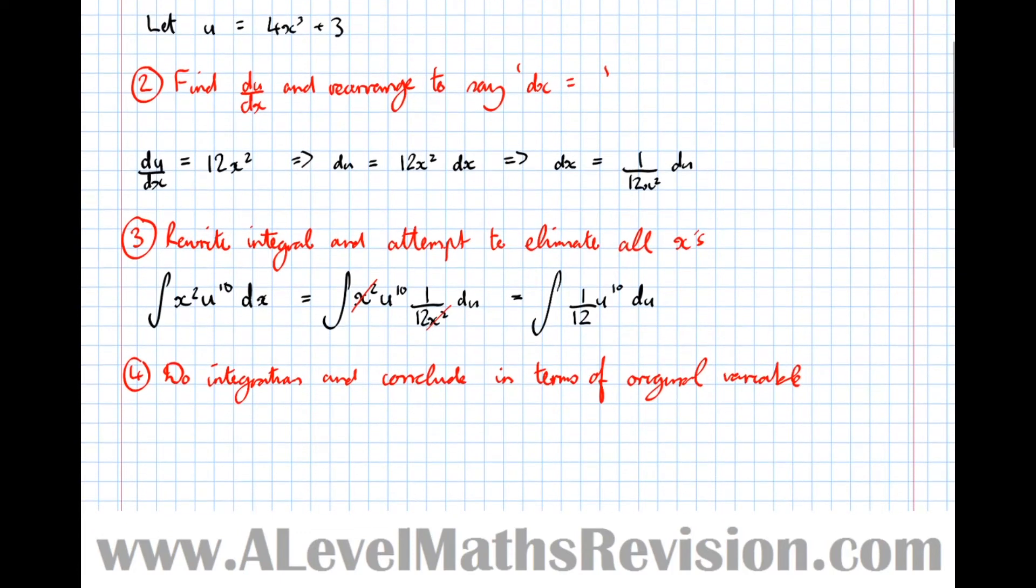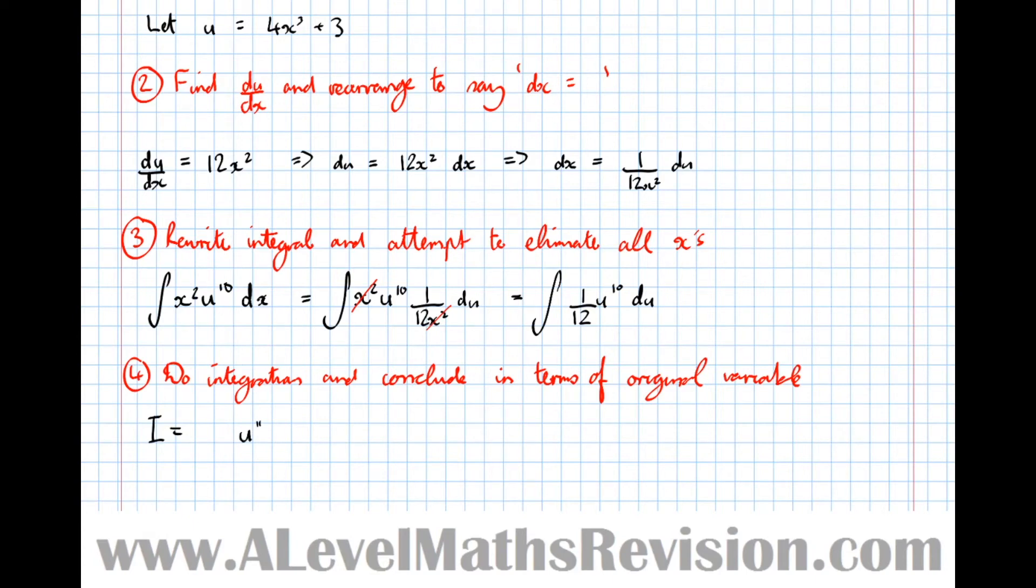Next step, do integration and conclude in terms of original variable. In this case, that was x. So that integral there, if we add 1 to the power, divide by the new power, we get I equals, so integrating this expression here, we get u to the 11 divided by, well, there's already 12 on the bottom, and 12 times 11 is 132. So u to the 11 over 132, plus c.